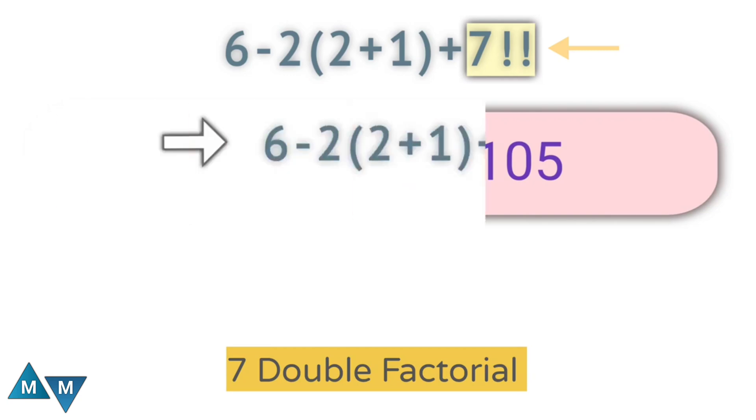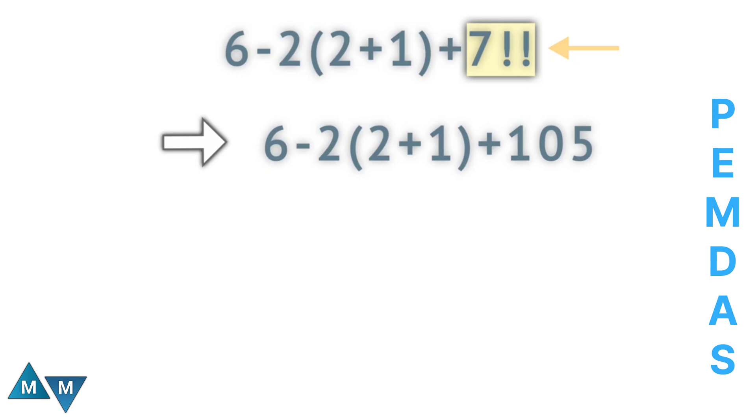Now let's replace the 7 double factorial with 105. Now the expression becomes 6 minus 2 parentheses 2 plus 1 plus 105.